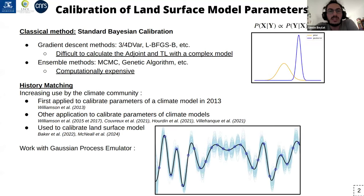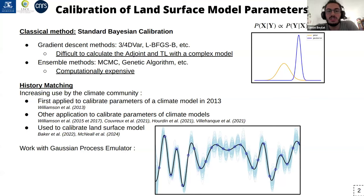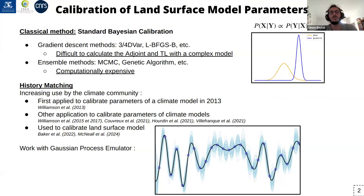We know that land surface models need to calibrate their parameters, and for that we have different approaches. The more classical is standard Bayesian calibration where we define a cost function and we want to minimize it. For that we could either use gradient descent methods, but we need to compute the gradient, which requires the adjoint or the tangent linear code — not always available for complex models. Another way is to use ensemble methods, but these can be really expensive and require a lot of different simulations.